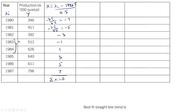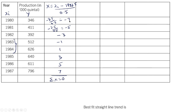If the number of years is odd, the middle year will have x = 0, then values go −1, −2, −3 above and 1, 2, 3 below. If it is even, the two middle years will have −1 and 1, and above that −3, −5, −7 and below 3, 5, 7. x squared values are 49, 25, 9, 1, 1, 9, 25, 49 — all these add up to 168.